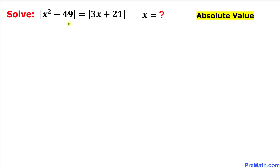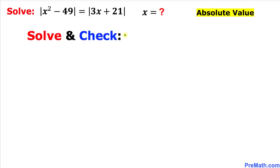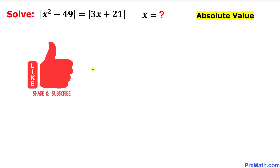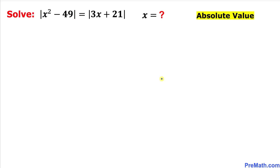Welcome to pre-math. In this video we are going to solve this given absolute value function: the absolute value of x squared minus 49 equals the absolute value of 3x plus 21. We are going to solve for x and check our solutions as well. Please don't forget to give a thumbs up and subscribe. Let's go ahead and get started.